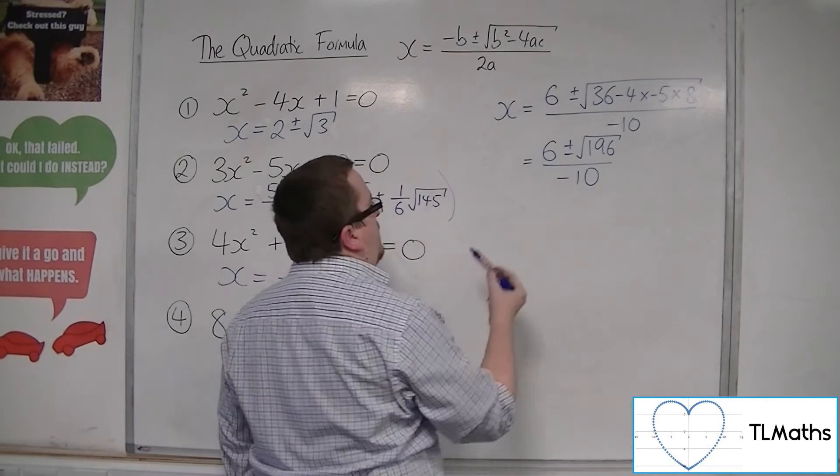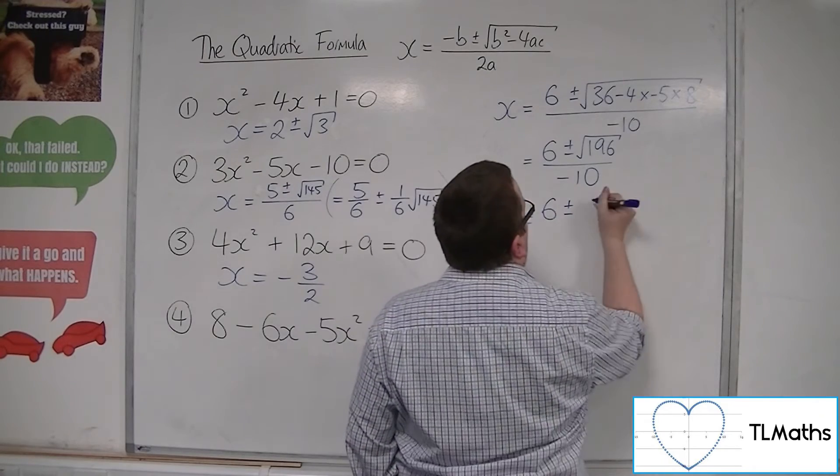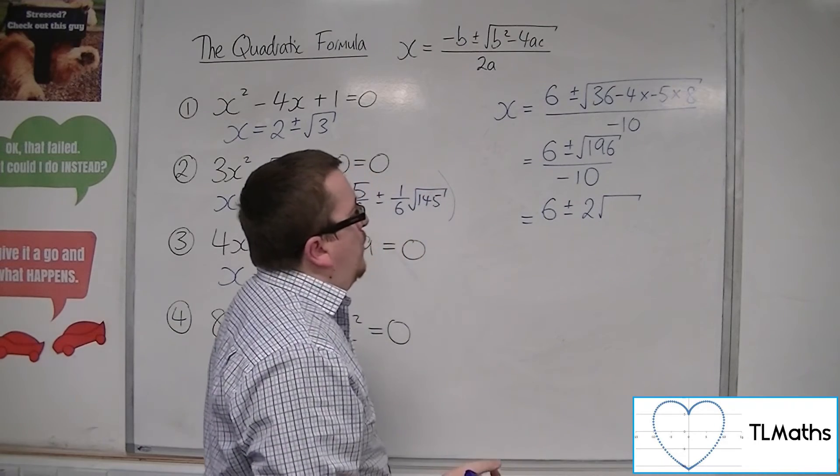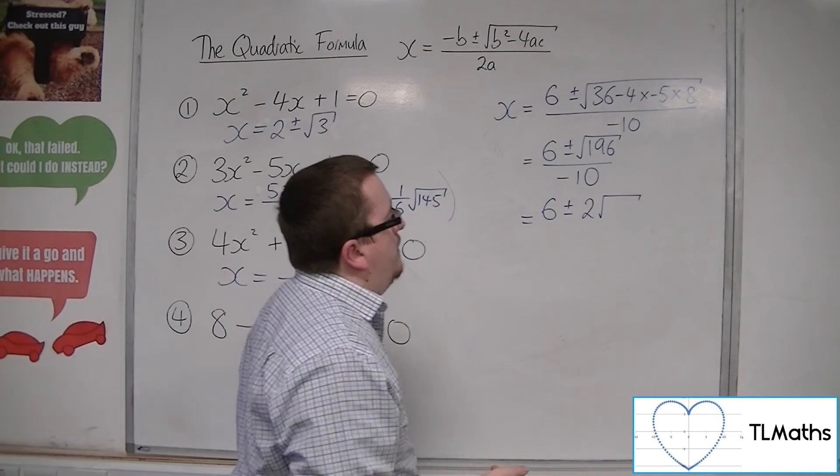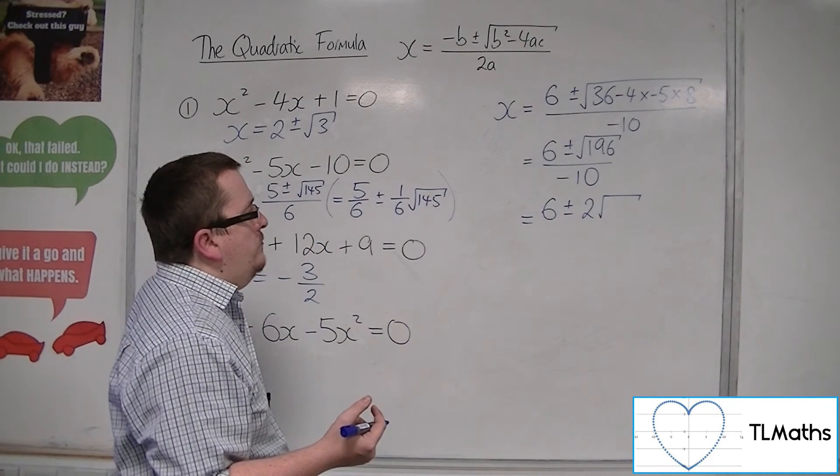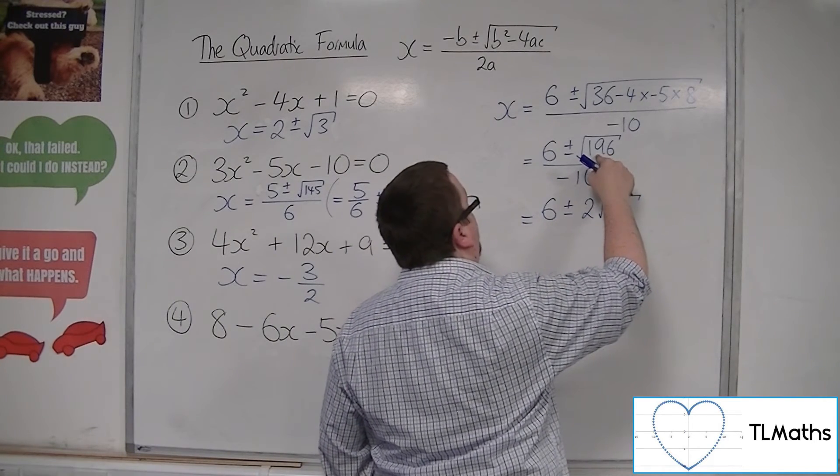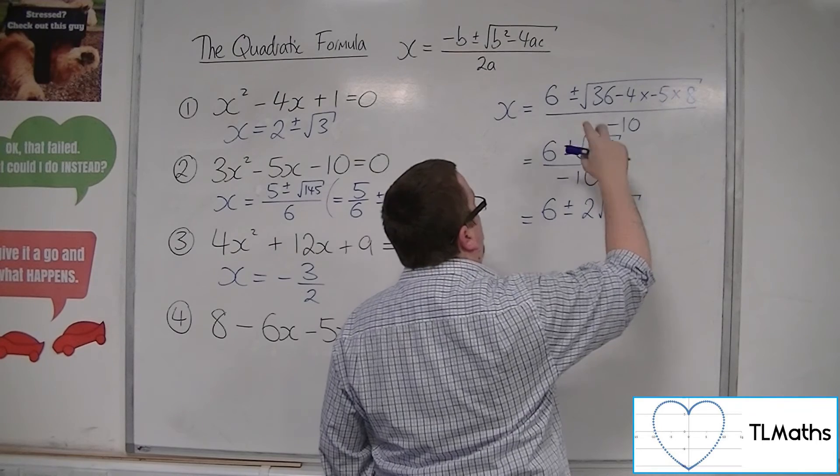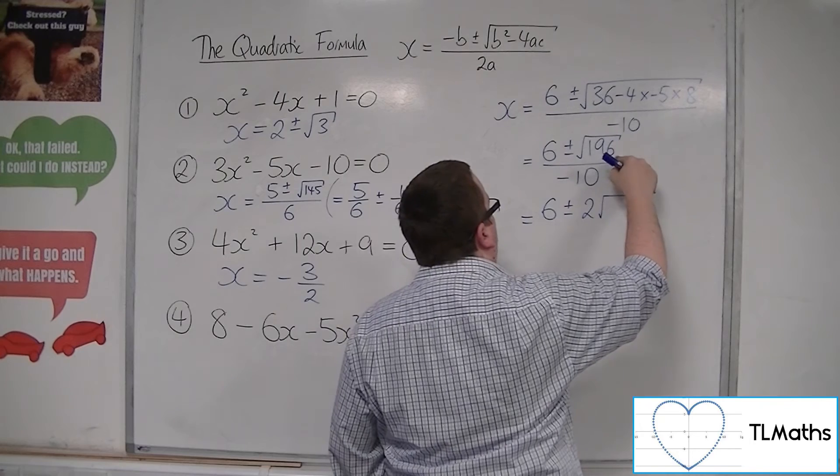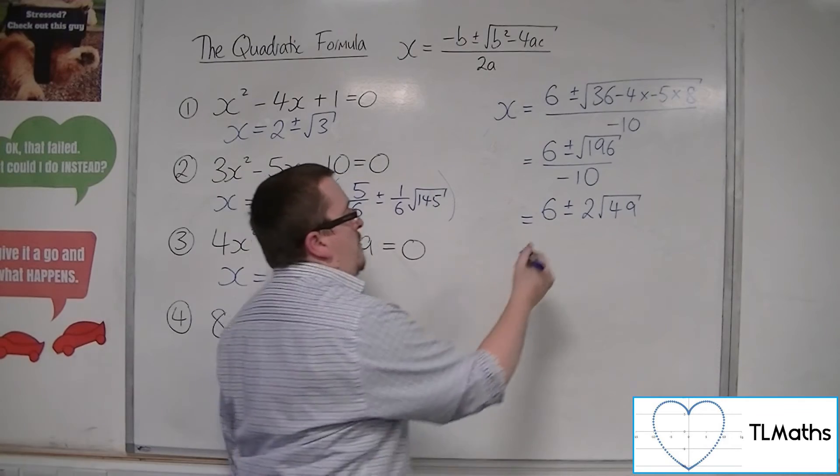So, if I was going to simplify this down, you could say that 6 plus or minus... so we get 6 plus or minus root 49 over minus 10.